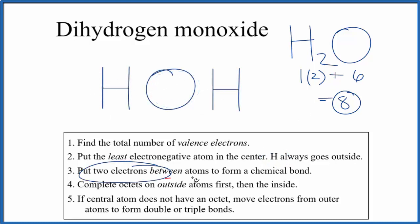Next, we'll put a pair of electrons between atoms. That's going to form the chemical bond. So far we've used two plus two, four. Remember we have eight total valence electrons for the dihydrogen monoxide Lewis structure here.